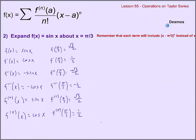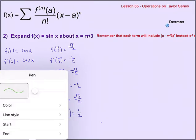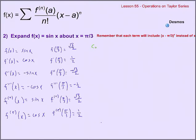Either way, we're going to find the coefficients for our polynomial using the same formula as before: the n-th coefficient is the n-th derivative of f divided by n factorial. We've got all the derivatives of f already, so we just need to divide them by n factorial. So c0 would be f of pi over 3 divided by 0 factorial, which is divided by 1. The first coefficient is the first derivative divided by 1 factorial. The second degree coefficient will be the second derivative divided by 2 factorial — I'll leave it written that way to help recognize patterns later.